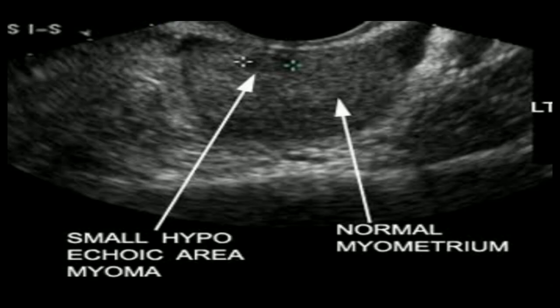This is very important to know. If we look at this diagram — this ultrasound of one patient — you can see the normal myometrium at one place, and also a small hypoechoic area of myoma. That hypoechoic area is most probably the uterine fibroid.